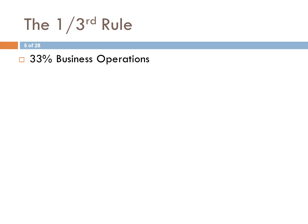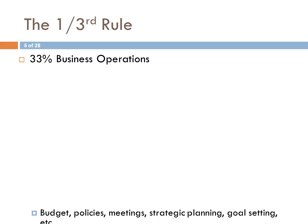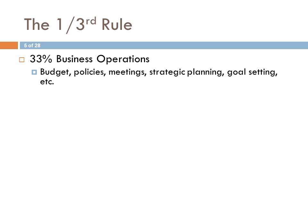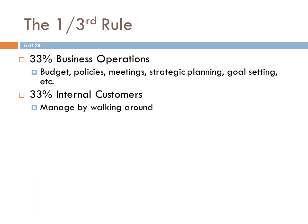The first part is 33% business operations — the idea that a manager or leader must be focused on budget, policy meetings, strategic planning, goal setting, and other activities centered on the operations of the business. The second 33% should be on internal customers — we call that management by walking around, also servant leadership, where you engage with your employees. The idea of walking around is not to look over their shoulders, but rather to get to know them, see if they have any problems, and observe how the organization is functioning.